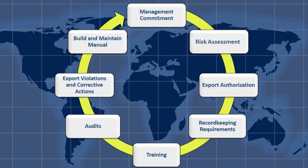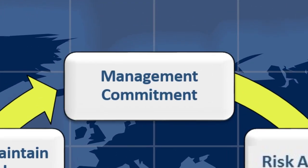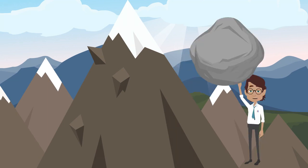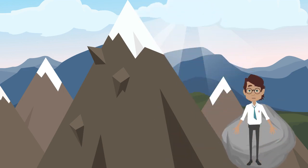Now on to the eight elements. The first element is Management Commitment — the most important factor in having an effective ECP. The circular chart focuses on Management Commitment. Creating a corporate culture of compliance without Management Commitment is like trying to push a heavy rock up a hill — very difficult, and you'll never have a successful compliance program. The scene shows a male character trying to push a heavy rock up a mountain.